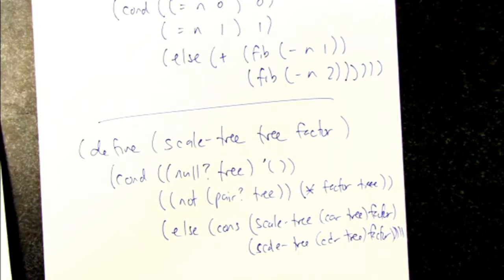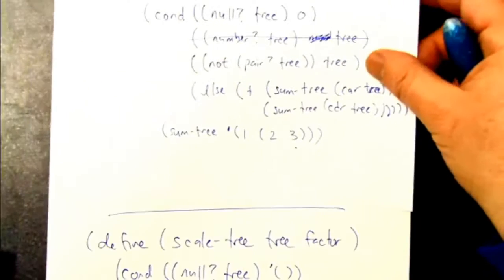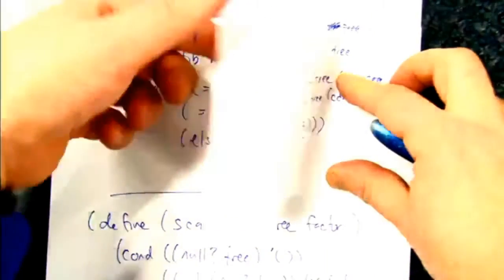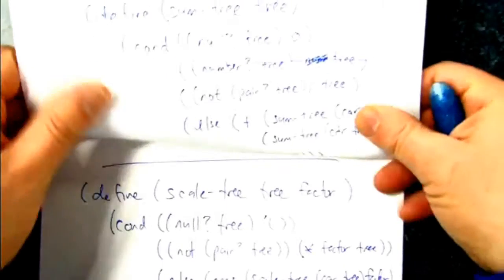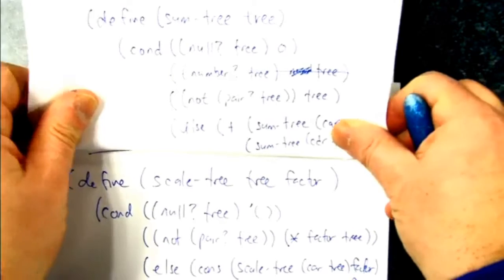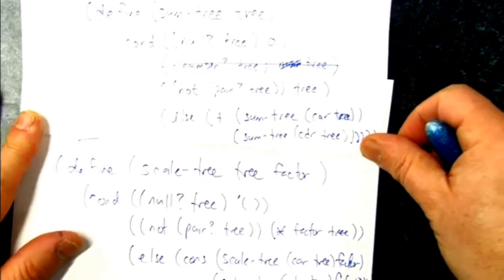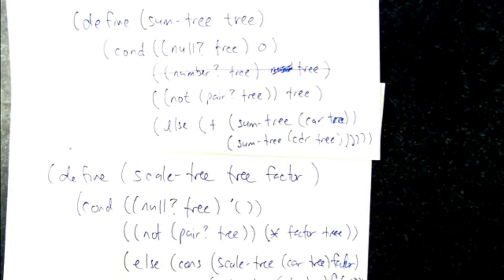Okay, so can you guess where this is going? Let's look at our two procedures here, sum-tree and scale-tree. You notice anything that's similar about them? All right, let's call out all the things that are similar.